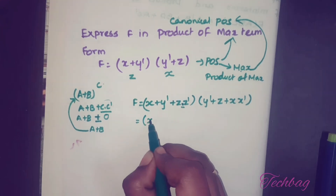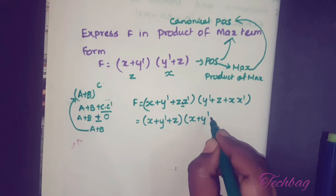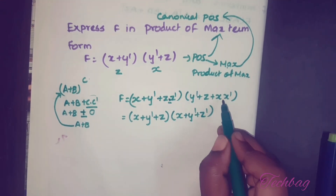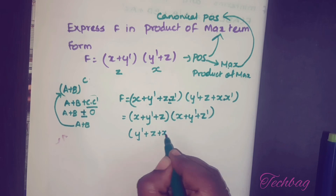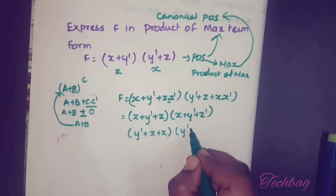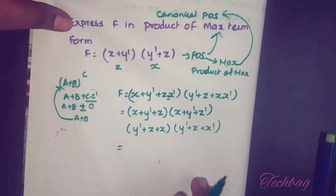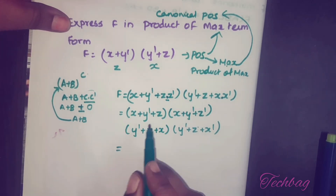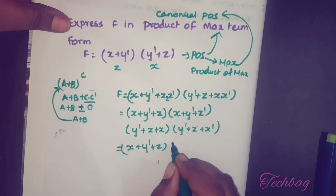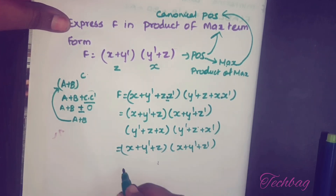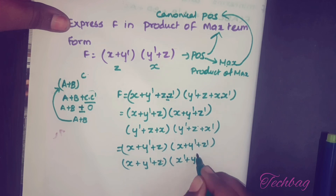After applying the distributive property, the first term expands to (x plus y' plus z)·(x plus y' plus z'), and the second term expands to (y' plus z plus x')·(y' plus z plus x'). Rewriting the variables in the correct order x, y, z: we get (x plus y' plus z), (x plus y' plus z'), and (x' plus y' plus z).